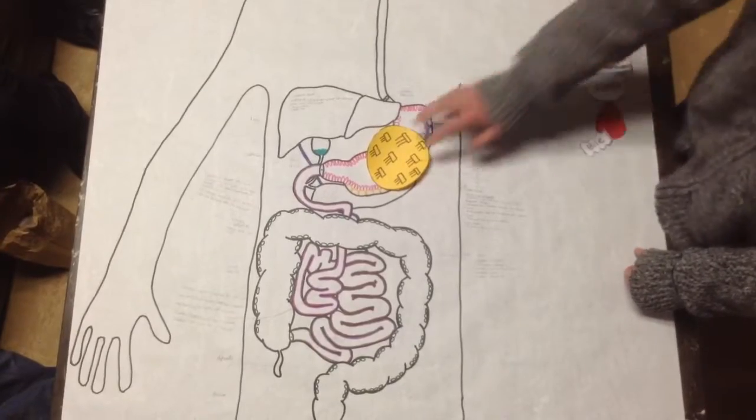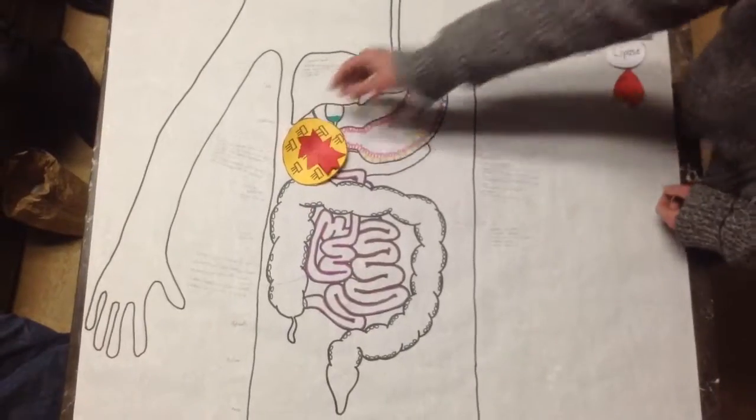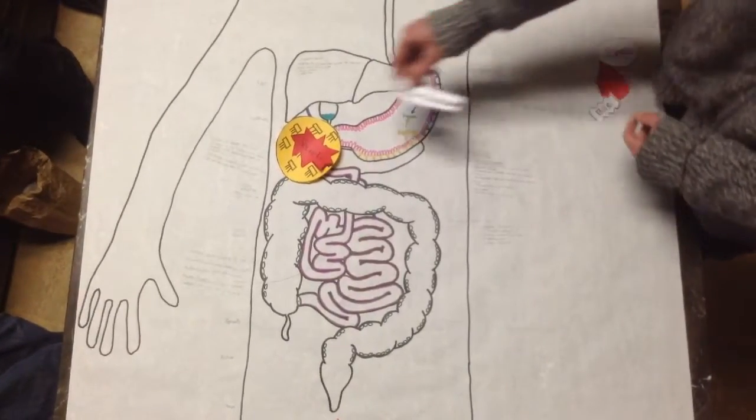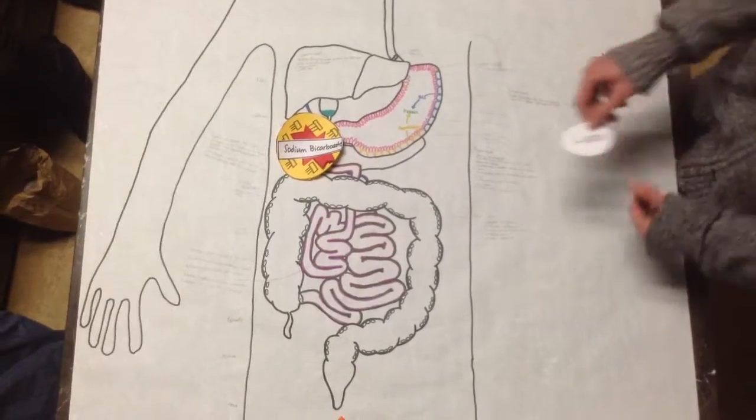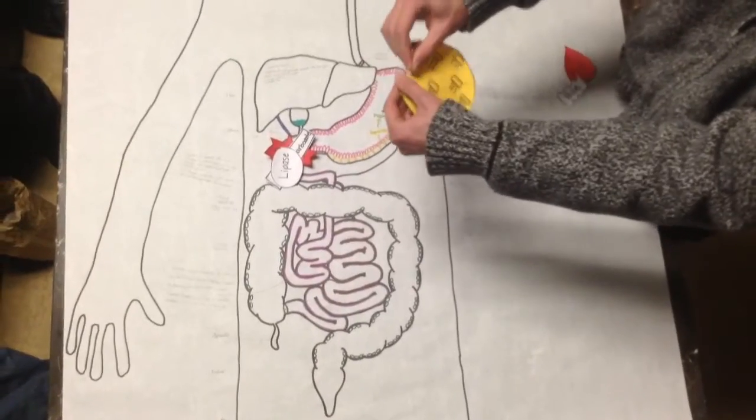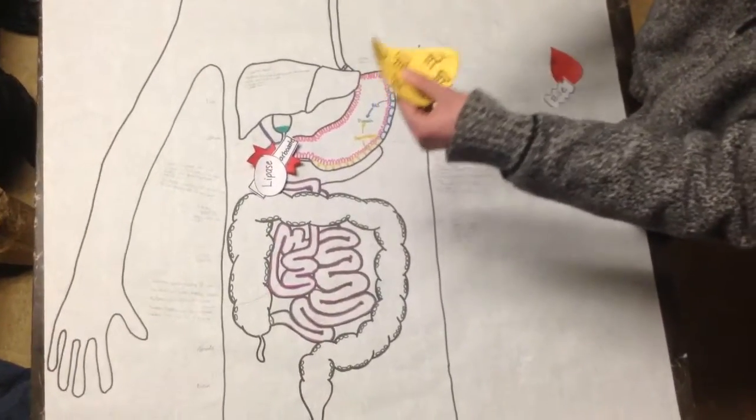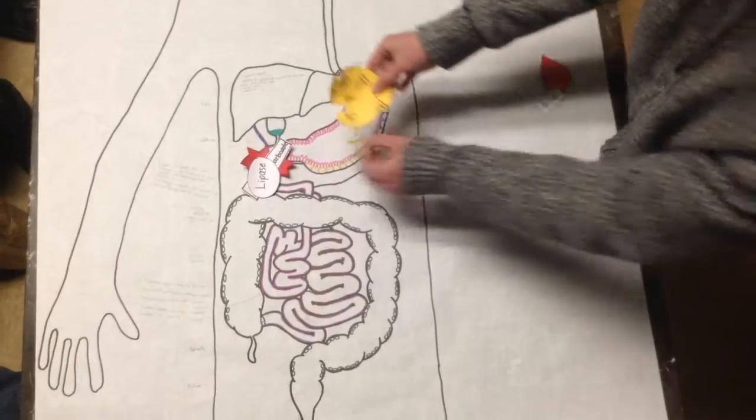So it carries on its way to the duodenum. In the duodenum, secretin is released, which releases sodium bicarbonate to neutralize and optimize the pH levels. And lipase. Now lipase is an enzyme that will break up our triglycerides into our three fatty acids and glycerol.